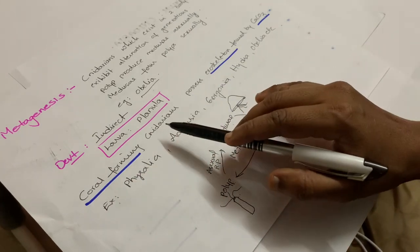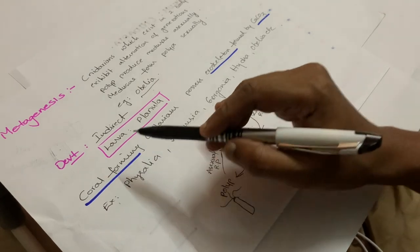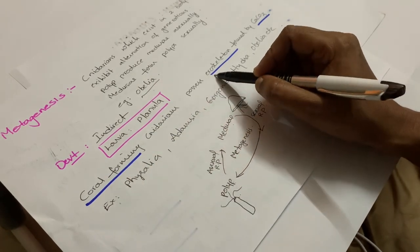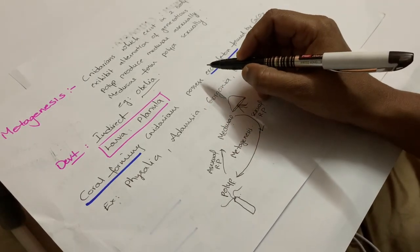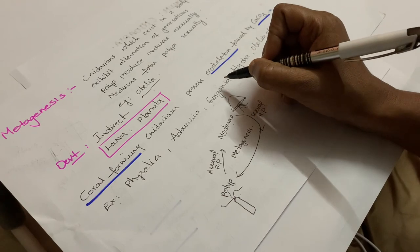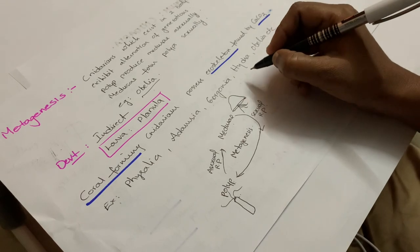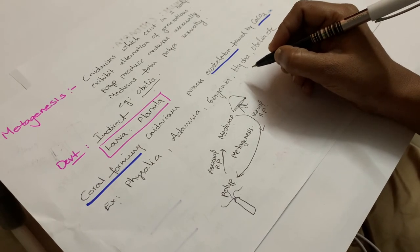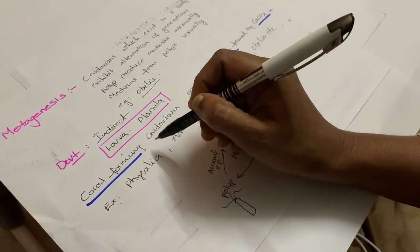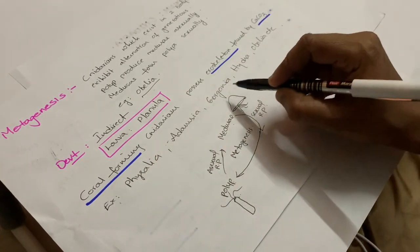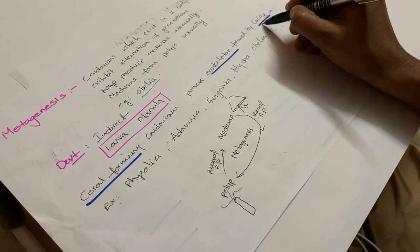Some cnidarians form coral colonies. Coral-forming cnidarians have an exoskeleton formed by calcium carbonate. Jellyfish do not have an exoskeleton, which is why they are very soft. The coral used in traditional Indian jewelry such as mangalsutra comes from these cnidarians.